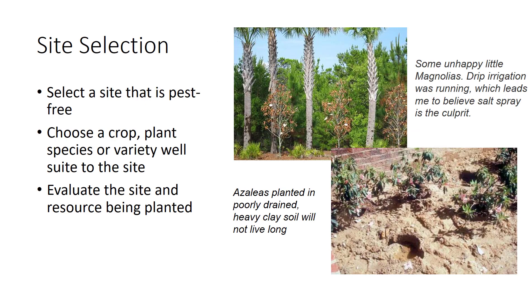Sometimes pest problems can be prevented by selecting a site that is pest-free or by choosing a crop, plant species, or variety that is particularly well-suited to the site. Before planting, evaluate whether the site and the resource being planted are a profitable match or whether the combination will create or aggravate pest problems. For example, trees or shrubs are often planted in landscapes without regard to the environmental conditions favorable to that plant. Plants poorly adapted to conditions at their site are more prone to insect and disease damage and generally do not perform well, such as these magnolias planted near the ocean and azaleas planted in poorly drained soil.